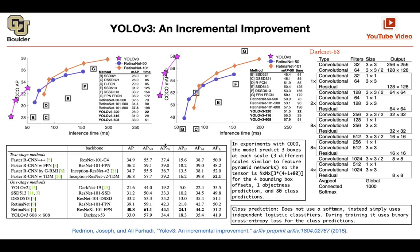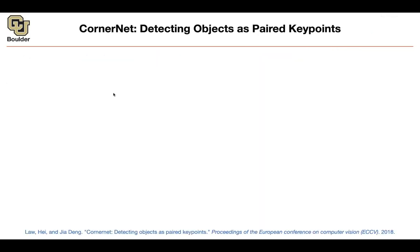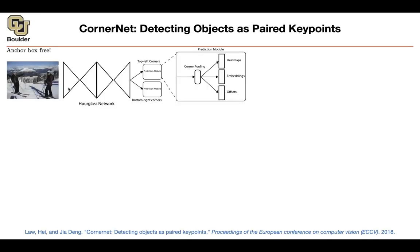Up until this point, everything was anchor-based — either proposal-based or anchor-based. The question is: can you get rid of the anchors? That's going to be the topic of the next few papers. Are anchors really necessary? CornerNet is one of the first papers trying to come up with algorithms for bounding box detection that are anchor-free or proposal-free.